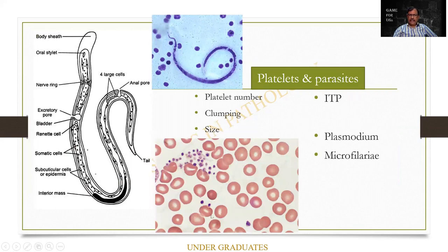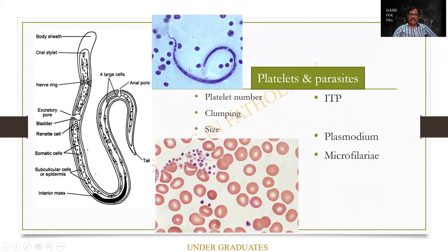Platelets: one to two microns, seen in clusters, somewhat pinkish gray in color. Parasites: this is Wuchereria bancrofti, more important in microbiology. It has a blunt head, a sheath, a sharp tail, and the tail end is free of nuclei. All the dark dots are called the nuclei. This can be kept as a spotter in the examination. The importance of platelets relates to ITP, which can be kept as a chart. Plasmodium malaria — vivax or falciparum — can be focused. Microfilaria is again a slide for students.